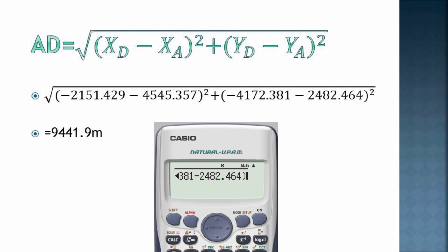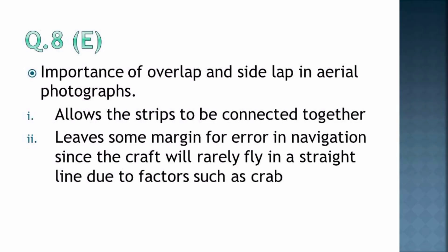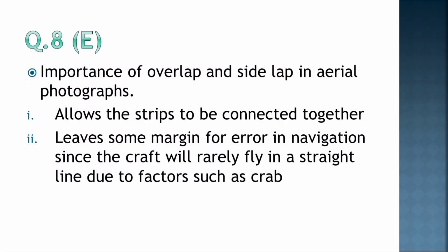Question 8E: The importance of overlap and side lap in aerial photographs. First, it allows the strips to be connected together. Second, it leaves some margin for errors in navigation since the craft will rarely fly in a straight line due to factors such as crab. That was question 8E. I'm sure that was simple, so you can revise photogrammetry. This is one of the simplest questions in the survey but rarely done by students.